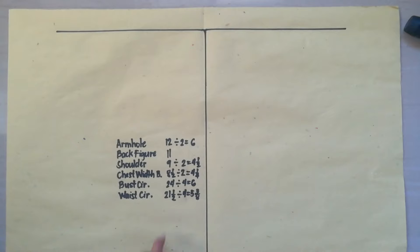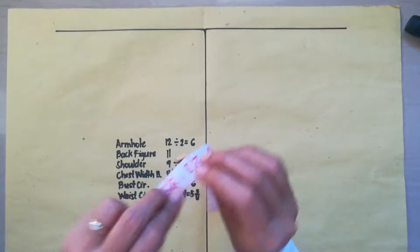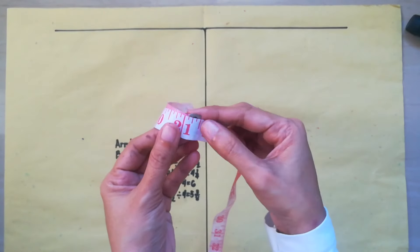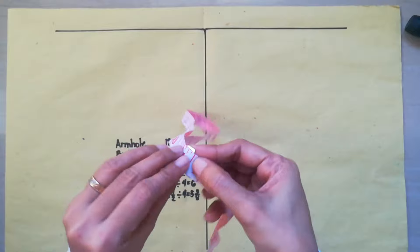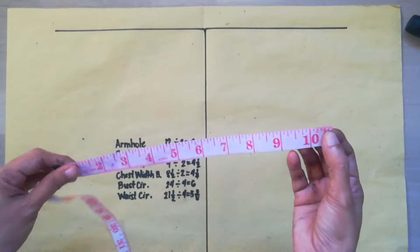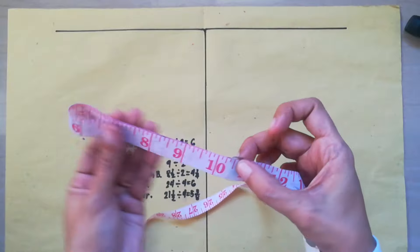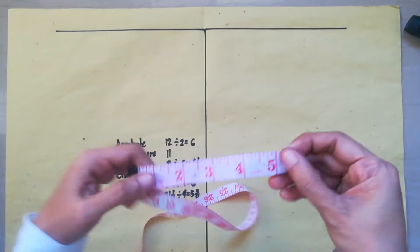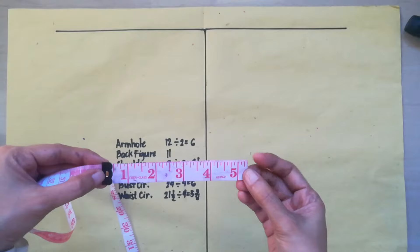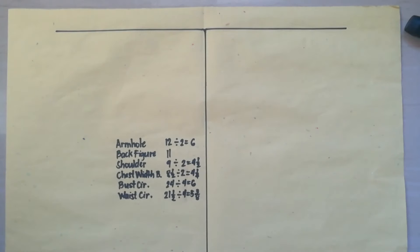Now, just in case you are having a hard time in getting the one-fourth of a measure, you can fold your tape measure. Fold the tape measure into half. For example, the measurement is 21 and 1 half. Fold the tape measure in half and you will get the half of the measurement. And then, from that half, fold again and that would be the one-fourth measurement of 21 and 1 half. So, that is 5 and 3 eighths. Now, let's continue.